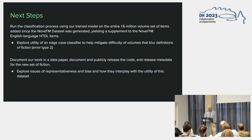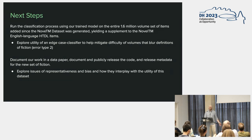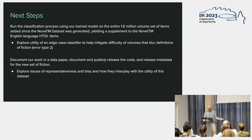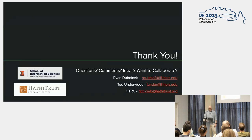Next steps: we'll run this classification process over the entire 1.6 million volume set and output a new set of English language fiction, as well as a documented data paper and the code. Look out for that from the HathiTrust Research Center. Thank you very much.